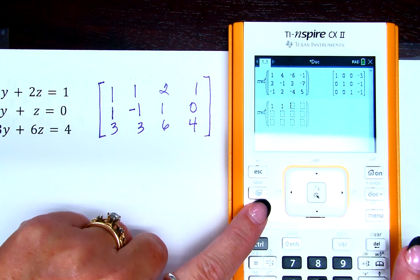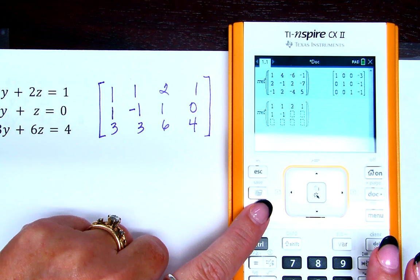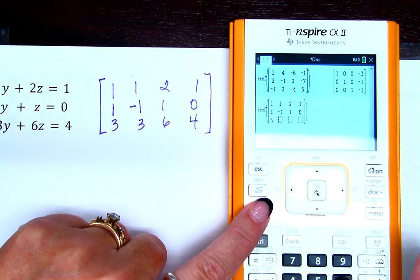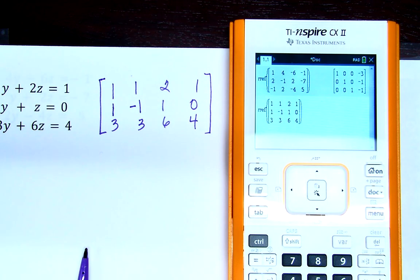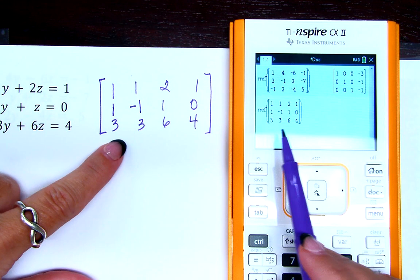Now enter your coefficient matrix. 1, 1, 2, 1, 1, negative 1, 1, 0, 3, 3, 6, 4. 1, 1, 2, 1, 1, negative 1, 1, 0, 3, 3, 6, 4.